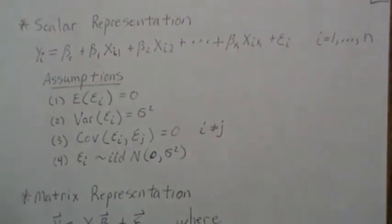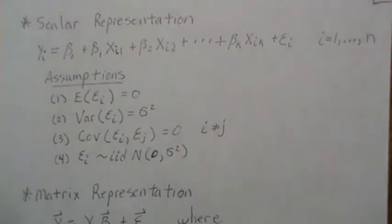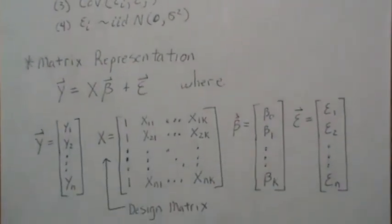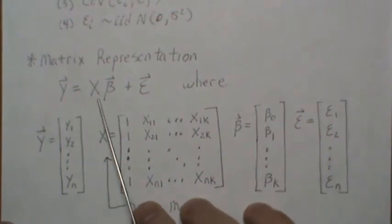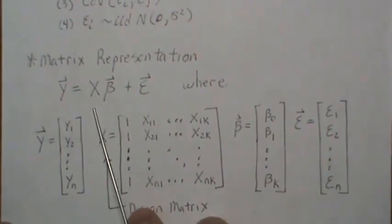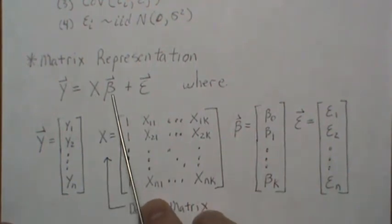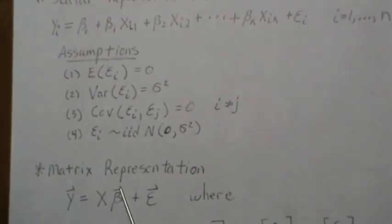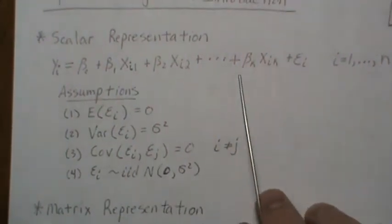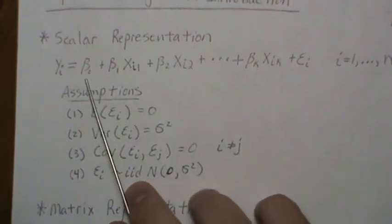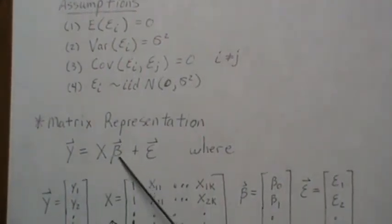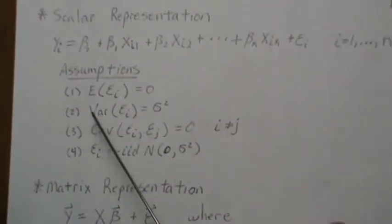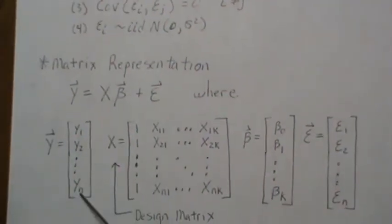Now in multiple linear regression most of what we do will be in matrix form or matrix notation and so this is the model in matrix notation. So it's y equals x beta plus epsilon where this is an n by k plus 1 matrix, this is a k plus 1 vector, n by 1 vector, n by 1 vector. Notice that the beta, there's 0, 1, 2 up to k, so there's k plus 1 betas and that's represented in this vector. And then the y vector is y1, y2, y3, so we just put them in a vector.